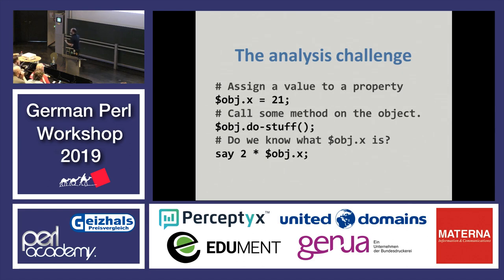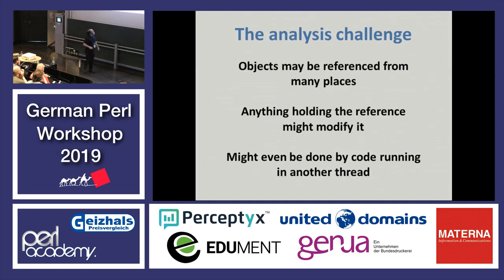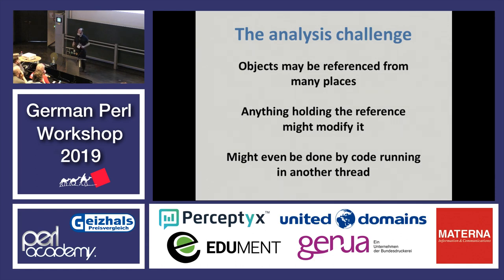We also have analysis challenges. If I have this program, I don't know if this answer here is 42 — it might be, or it might not be. A more interesting property in a realistic program would be: do we know what type of value it is? For example, is it an integer? Because if we know that, we can maybe avoid doing some more dynamic lookup later. The reason this is so hard is that objects are reference types — one object in memory can be referenced from lots of different places, potentially. Anything that holds the reference might be able to update it and change it. And that could even be done by a different thread in the worst case, which really makes that analysis a lot of fun.